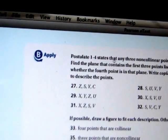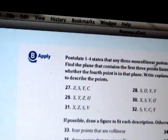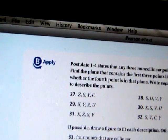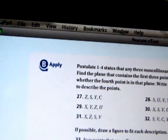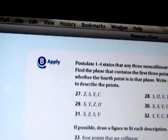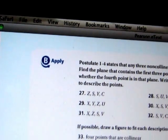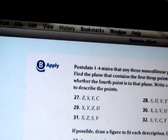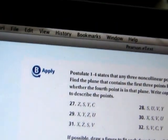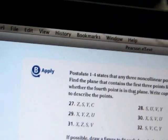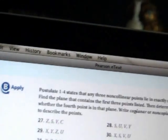Postulate 1.4 states that any three non-collinear points lie in exactly one plane. That means if we're looking at this plane, these three points can only be in one plane. Find a plane that contains the first three points listed, then determine whether the fourth point is in that plane. Write coplanar or non-coplanar to describe the points.